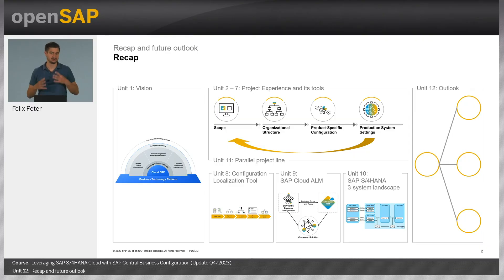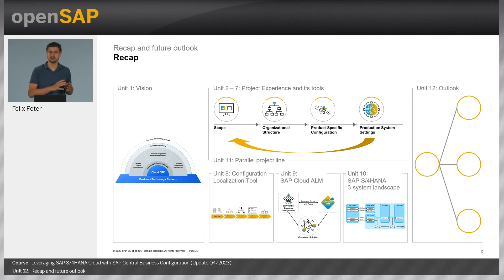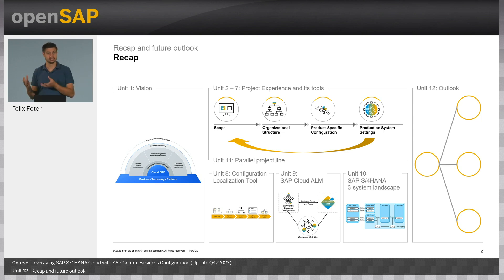To start with the recap: the first thing you heard in Unit 1 is the vision of SAP Central Business Configuration — how we position ourselves inside the Intelligent Enterprise Suite and want to support SAP's products with business configuration in the future. In Units 2 to 7, we talked about the project experience, covering capabilities for scoping, organizational structure setup, product-specific configuration, and productive system settings.